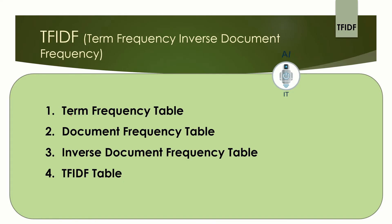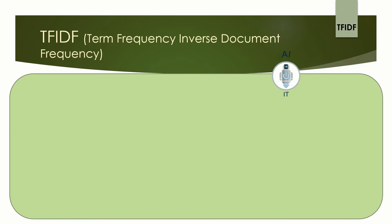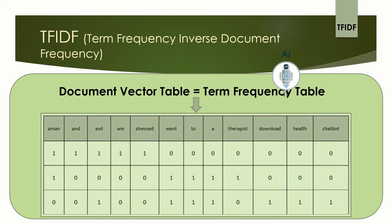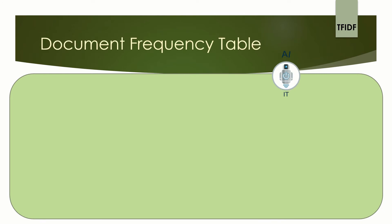Let us go through the first one: the term frequency table. The term frequency table is nothing but the document vector table which you have created using the Bag of Words algorithm. Next, we create the document frequency table. The document frequency table represents the number of documents in which a particular word occurs. How many documents do we have? We have a total of three documents.